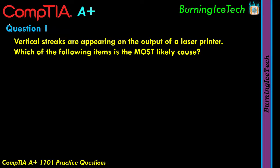Vertical streaks are appearing on the output of a laser printer. Which of the following items is the most likely cause? Whenever you see a word like MOST in capital letters, that normally means there's more than one answer that may or may not be correct, and they want you to pay attention. In the actual A-plus exam, they'll use words like MOST, BEST, or MOST LIKELY in caps — meaning there may be more than one answer and they want to know which is most correct.